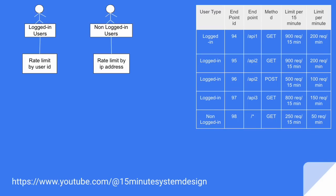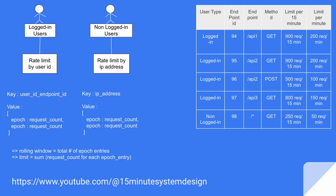How are we going to do this? We are going to rate limit all requests for logged-in users based on their user ID. For non-logged-in users, we can do it based on their IP address. We are going to maintain a hash map in the cache and maintain the sliding window accordingly. For each user ID and endpoint ID, we make a key, and the value is a sliding window where each epoch represents a minute-level time unit, and the request count represents the number of requests served so far per minute.